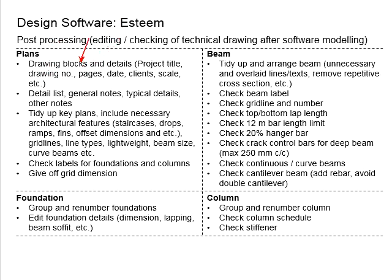First, we look at the structural plan, which requires incorporating drawing blocks and details — project titles, drawing numbers, pages, dates, clients, scales, and so on. The drawings produced by the software are raw, and you need to process everything, group them together, arrange them, and make them presentable. A typical RC structure consists of many elements, and every single element will have its own technical drawing.